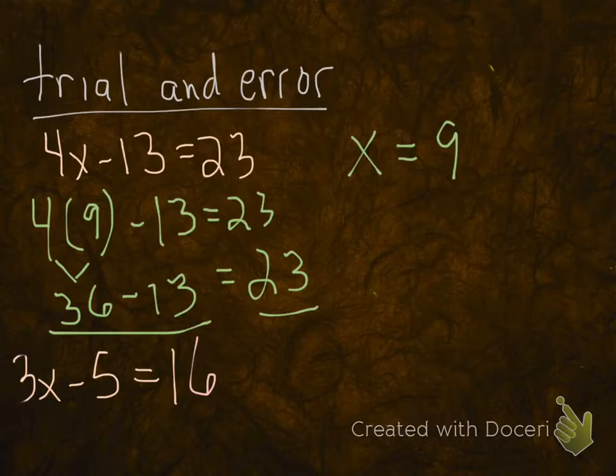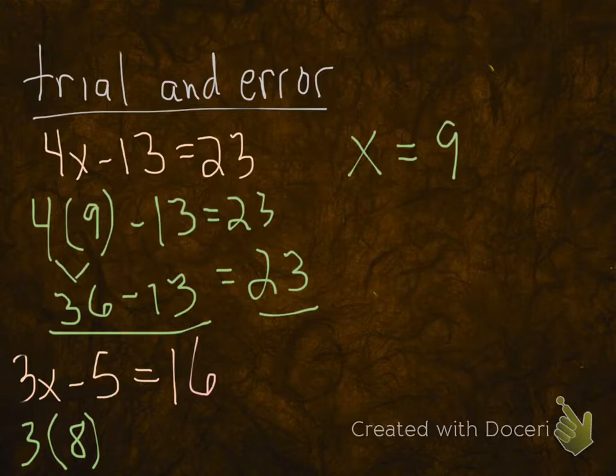Okay, let's look at the next equation. 3x minus 5 equals 16. This, in the same way, is like 3 times what number minus 5 equals 16? Well, let's just plug in a number and check. Maybe we'll check, I don't know, let's check 8. 3 times 8, plug it in with parentheses, in place of the x, minus 5 equals 16.